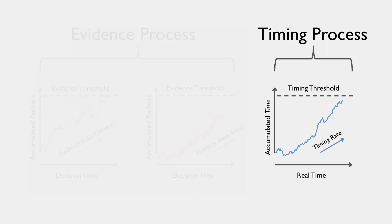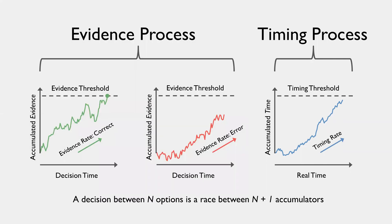And so this is represented in the model in the same structural distribution family as the evidence process. And so now we have an evidence process that races against a timing process such that a decision between n options is now a race between n plus one accumulators.